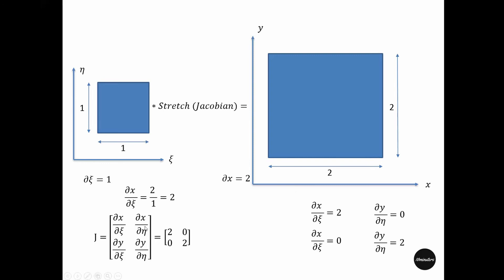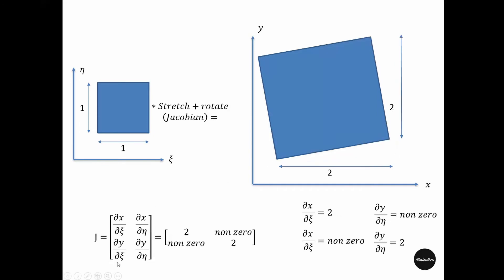For clarification, let's see when this component is non-zero. So for this Jacobian that transforms this square into this square, when zeta moves one, we see that along x, y also changes. As a result, this component is non-zero.